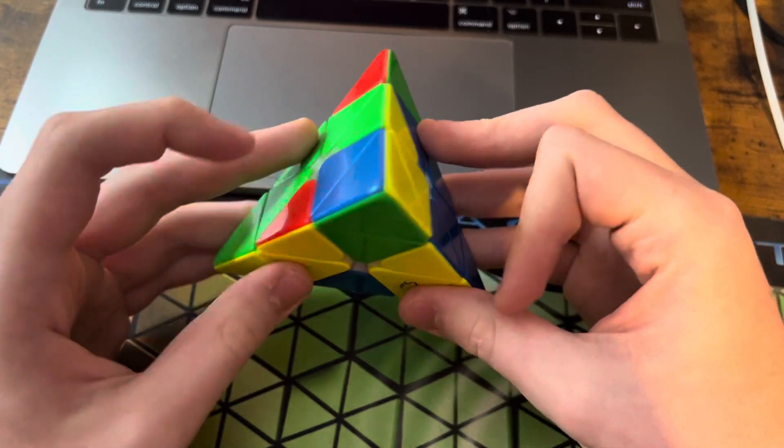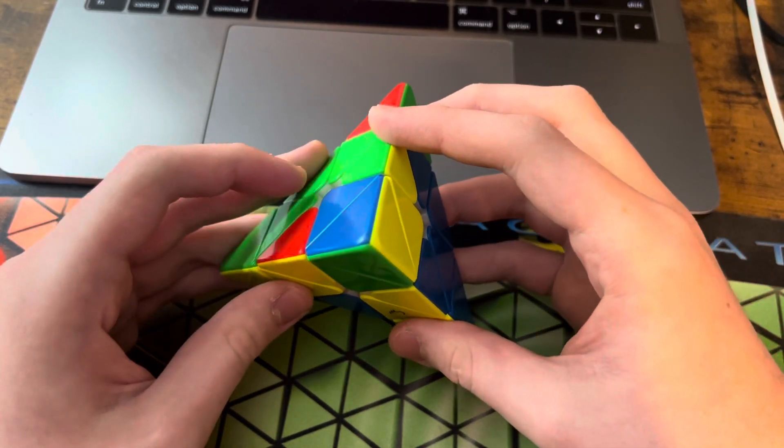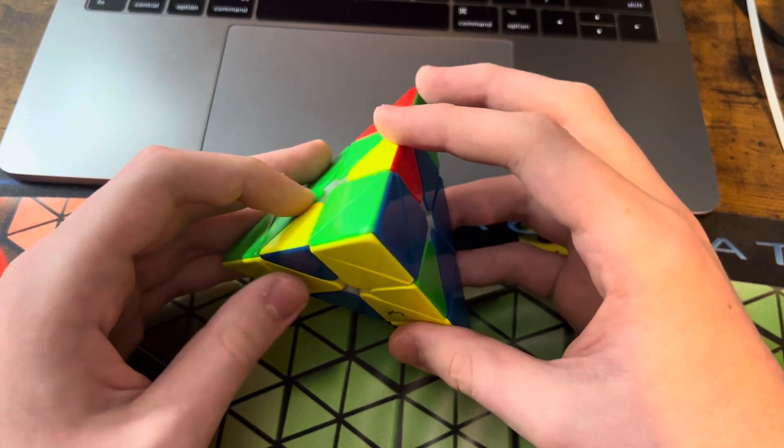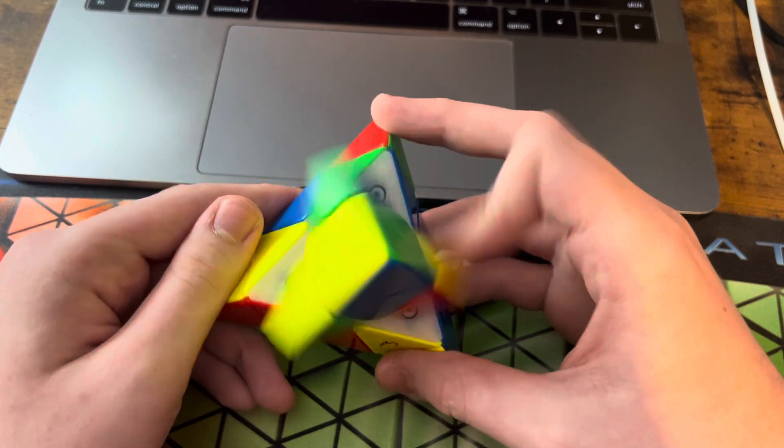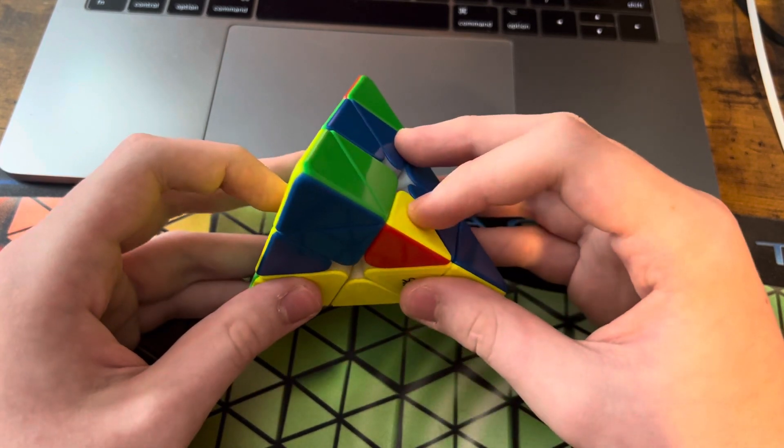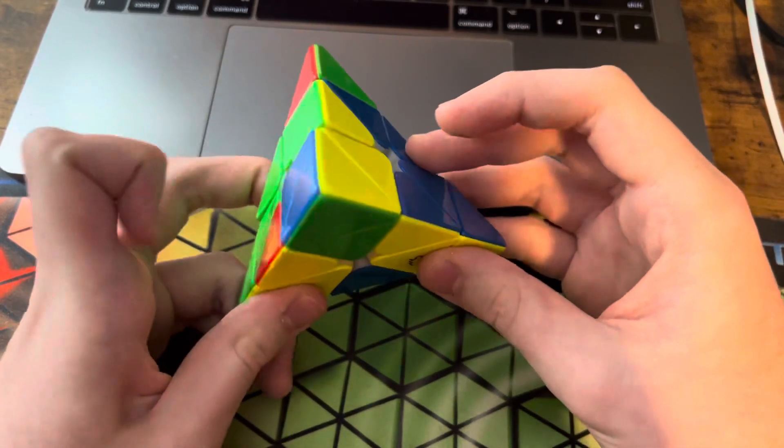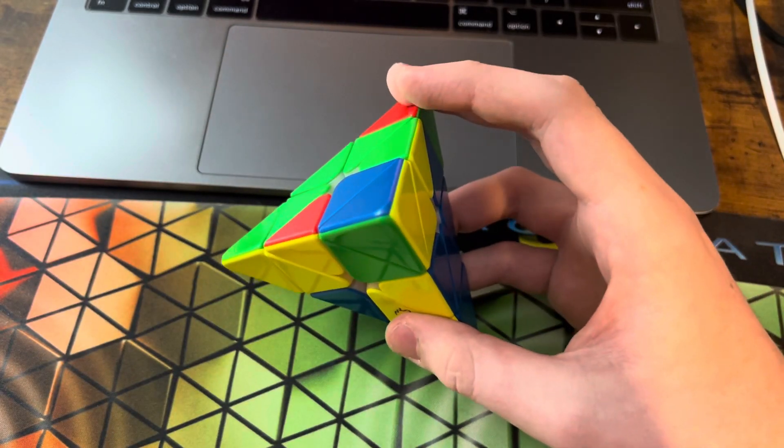And then I did an alternate ALG for this L4E, so normally I would have it at this angle, solve this edge with L' U L, and then just insert this edge like that. But for this AUF, I know an alternate ALG.